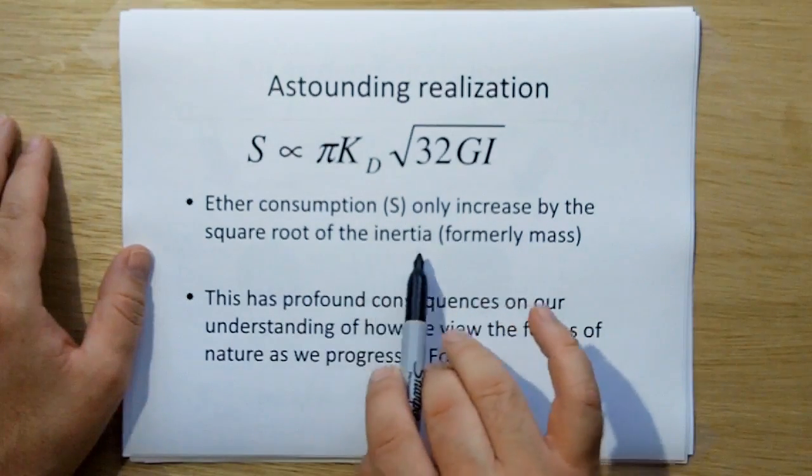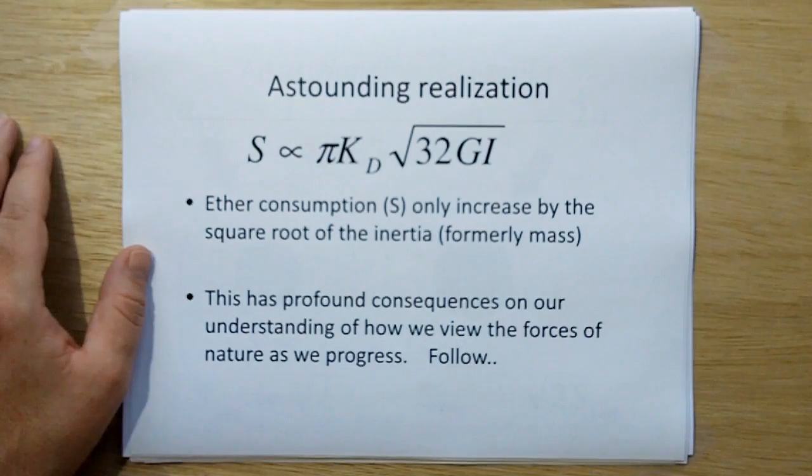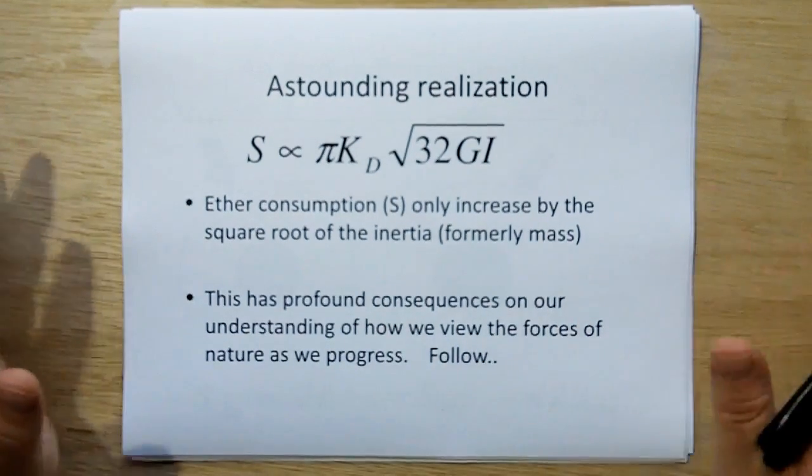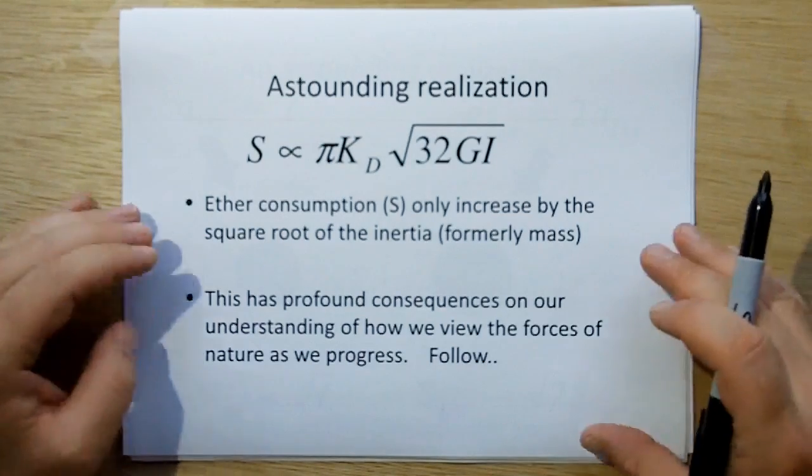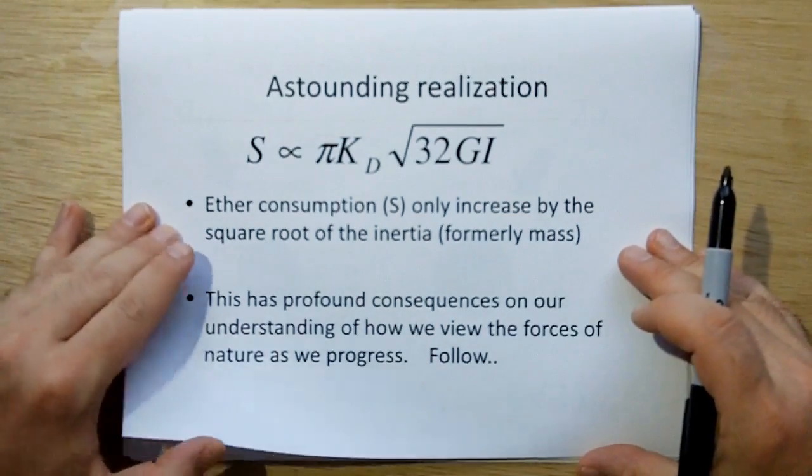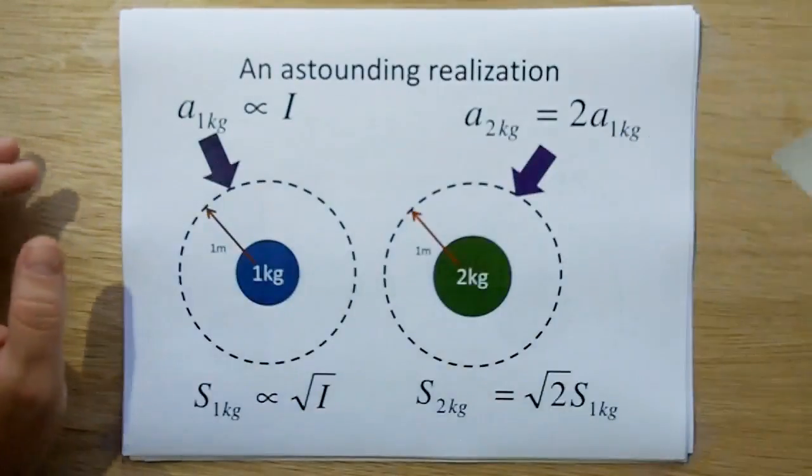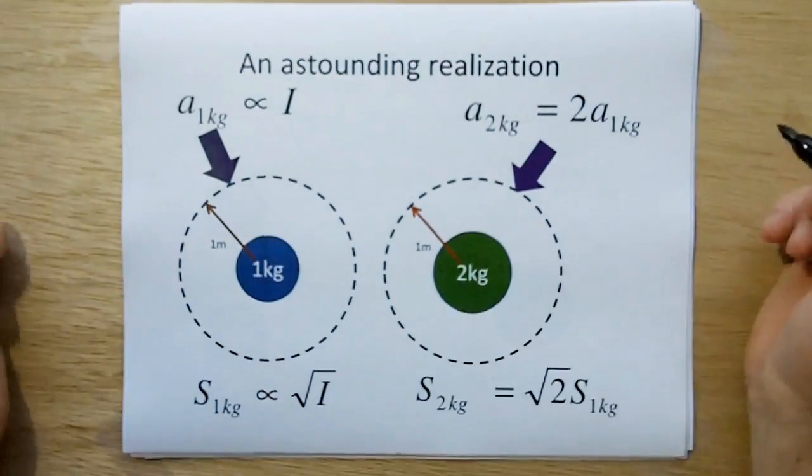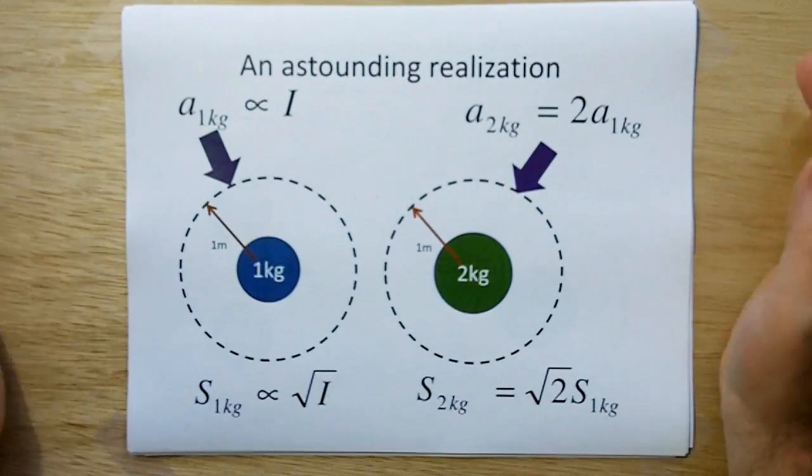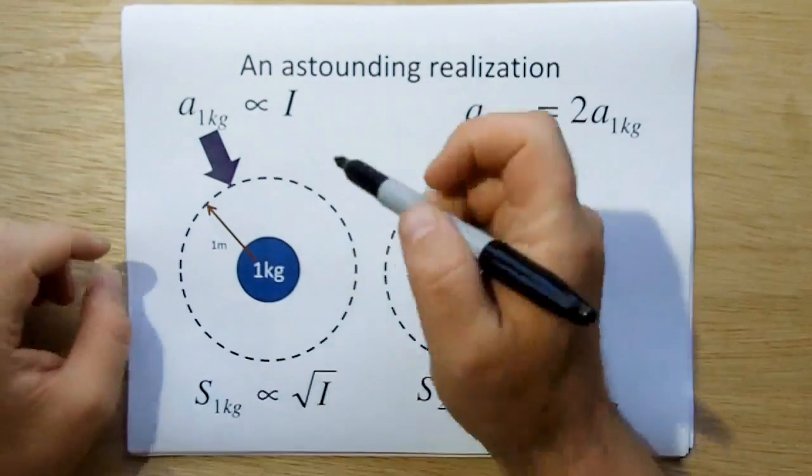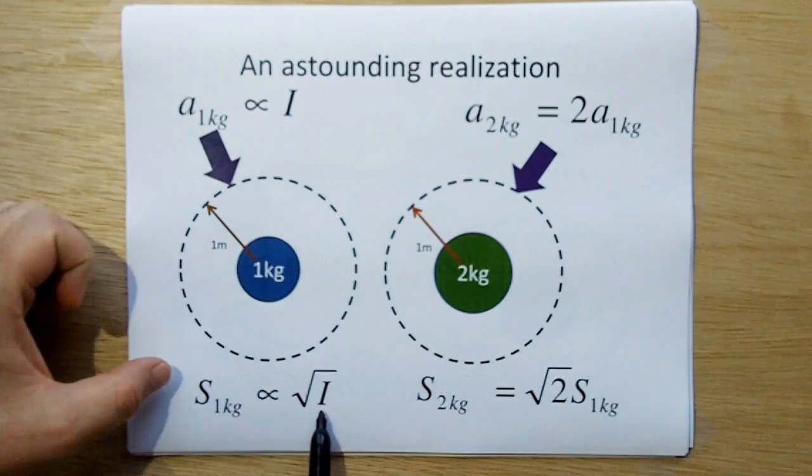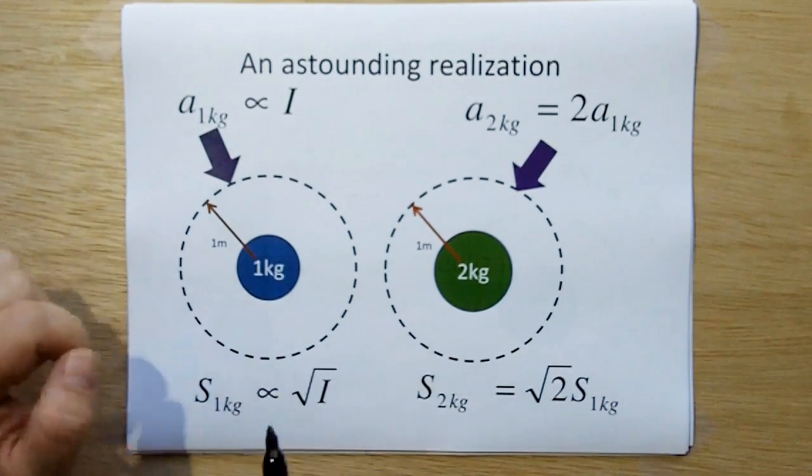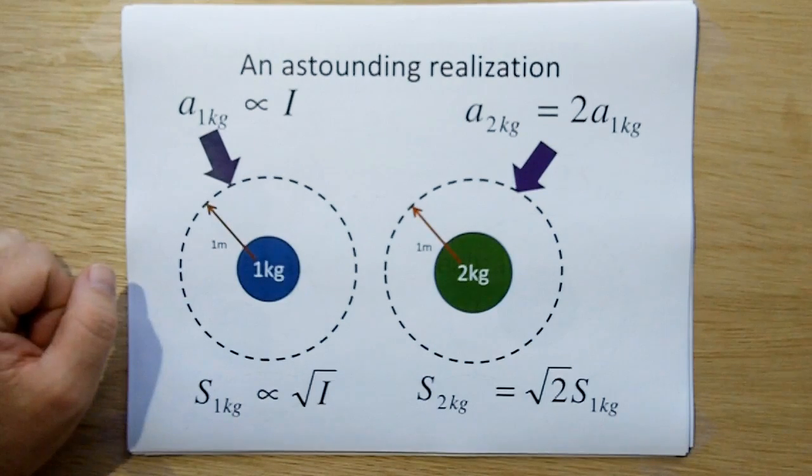But we can come up with an astounding realization that the ether consumption only increases by the square root of the inertia of the object. Now, that sounds like it's just a bunch of words strung together, but this has profound consequences in our understanding how we view the forces of nature as we progress. And let me explain that to you. Consider that we have a one kilogram inertia block of matter here. And that's going to consume ether at a particular rate, which is going to be proportional to the inertia of the object, the square root of the inertia of the object.